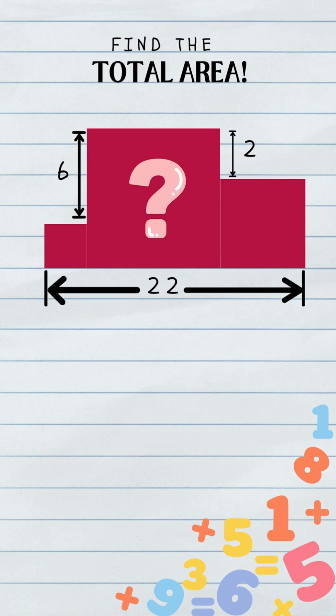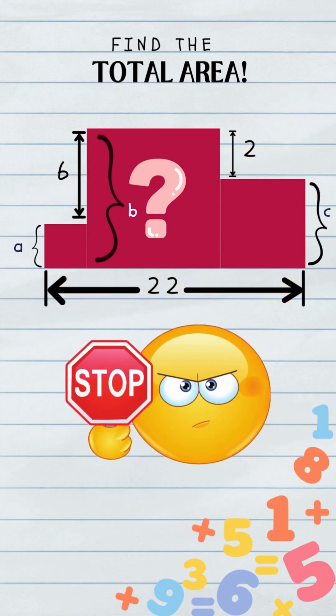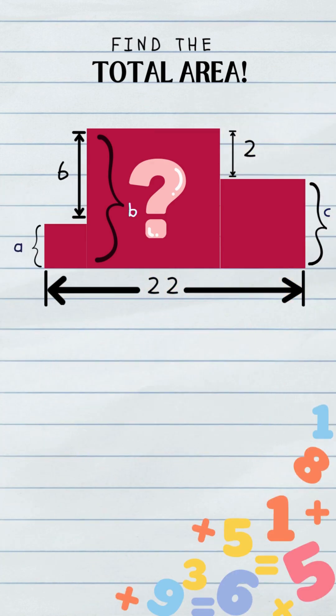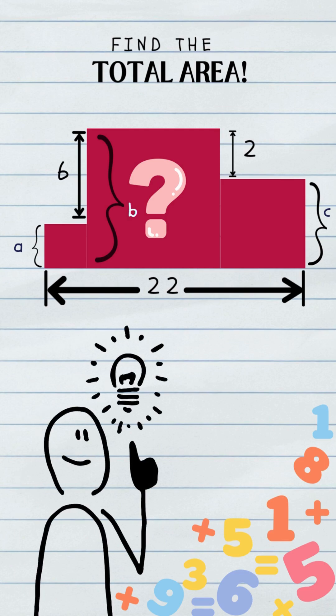All right, your brain probably sees three squares and immediately screams three variables, A, B, and C, right? Don't do it. Juggling three variables is a total nightmare. It's the slow way. There's a secret, a better way, a hack.